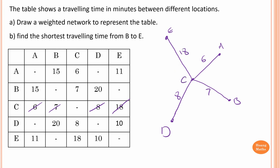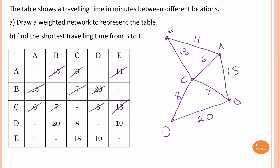Moving on to vertex A: A to B is 15, just connect together — 15. A to C already done. A to E is 11, so connect these two — this is 11. Moving on to vertex B: B with A done, B with C done. B with D is 20 — connect together, which is 20. Moving to vertex D: D with B done, D with C done. D with E is 10 — connect them — which is 10. E already done with A, E already connected with C which is 18, and E connected with D. That's all done — this is a weighted network.